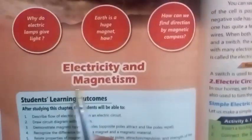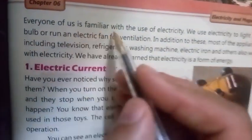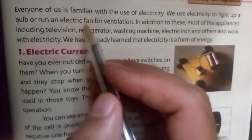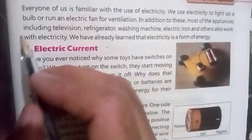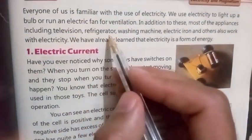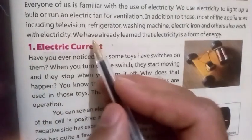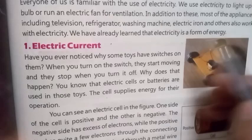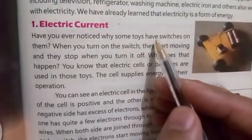Bismillahirrahmanirrahim. Chapter number six: Electricity and Magnetism. Everyone of us is familiar with the use of electricity. We use electricity to light up a bulb or run an electric fan for ventilation. In addition to these, most of the appliances including television, refrigerator, washing machine, electric iron and others also work with electricity. We have already learned that electricity is a form of energy.